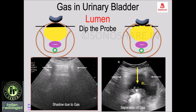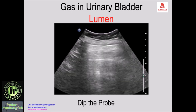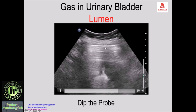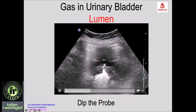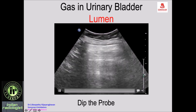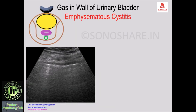This is the dipping technique, which confirms that the gas is within the urinary bladder. If the gas is in bubbles outside, it will be displaced and you will see an empty urinary bladder. This video shows the dipping probe technique: you see the echogenic line and shadowing, but when you dip the probe the gas separates into two on either side, allowing ultrasound to pass through and revealing the thick-walled rectum posteriorly.